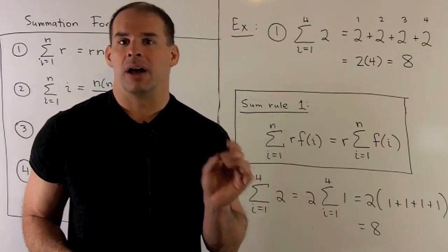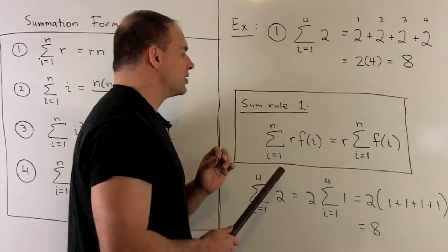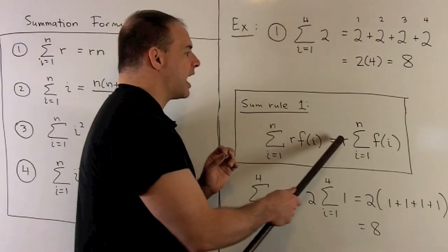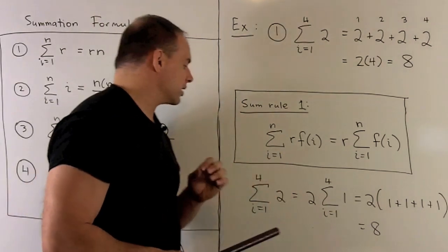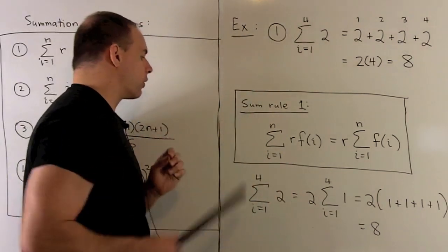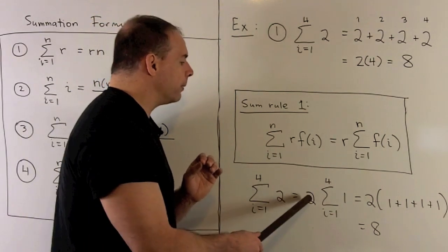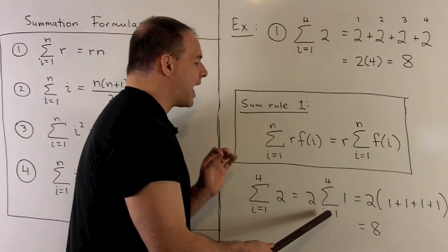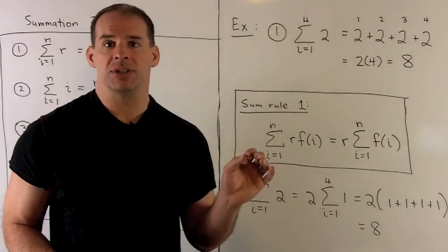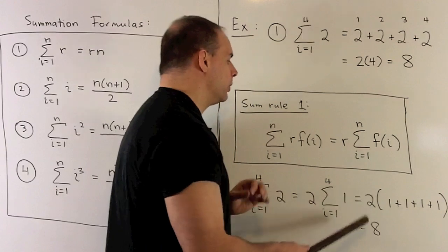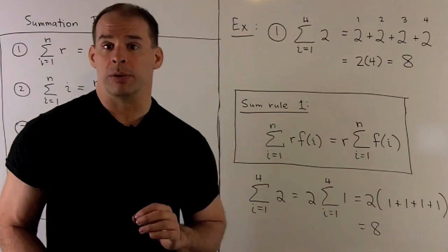This brings up another useful summation formula: if you take a function, multiply by a constant, and then sum, you could save that constant for later and pull it out after summing the function. For instance, with the sum as i goes from 1 to 4 of the function 2, we could pull the 2 out, leaving a 1 inside. Then we apply the sum to the 1 — just take 1 and add it to itself 4 times to get 4 — then multiply by the 2 to get 8 as expected.